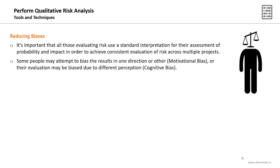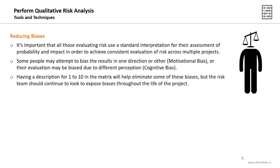Some people may attempt to bias results in one direction — such as motivational bias — and others may use cognitive bias, where evaluation is skewed by different perceptions. In both cases we want to prevent or detect this bias and take corrective actions. Having a description for scores 1 to 10 in the matrix will help eliminate some of these biases, but the risk team should continue to watch for and expose biases throughout the life of the project.